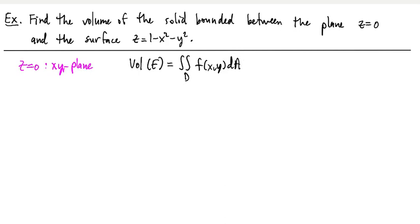Where this function, this is the key, this function is the function that gives us the surface. So for this problem the function is 1 minus x squared minus y squared. So this is the integrand, this is what we want to integrate on this example.